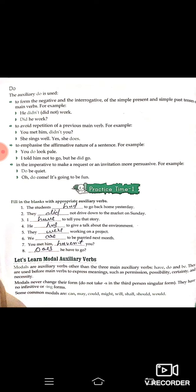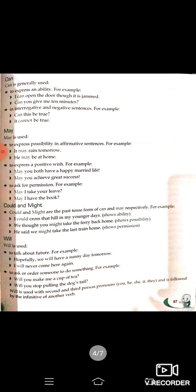When we want to express ability or possibility, we use 'can.' For example: 'I can open the door though it is jammed' — expressing ability. 'Can you give me 10 minutes?' — asking in an interrogative sentence. For negative and interrogative forms: 'Can this be true?' — kya yeh sahi hai? 'It cannot be true' — yeh sahi nahi hai.